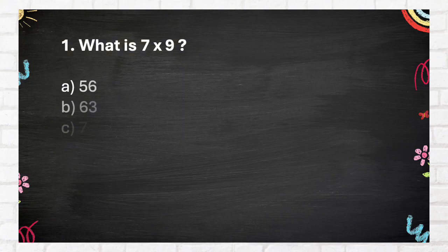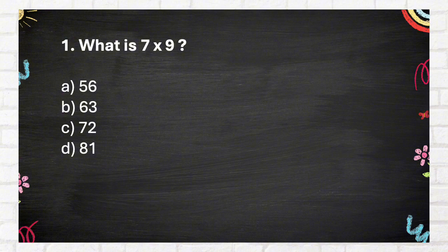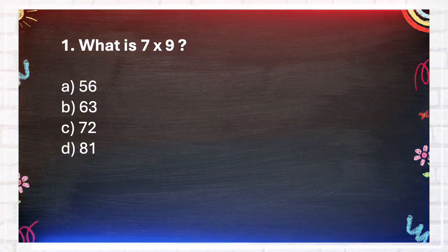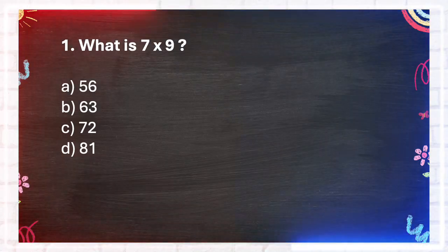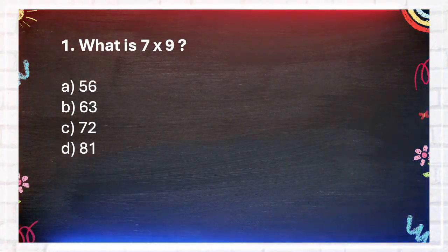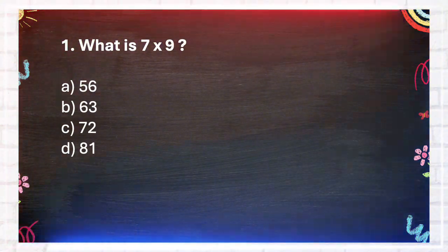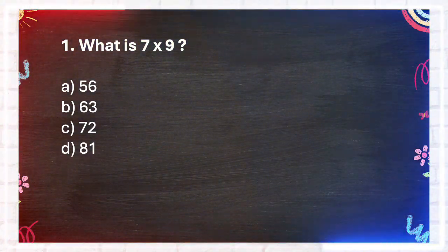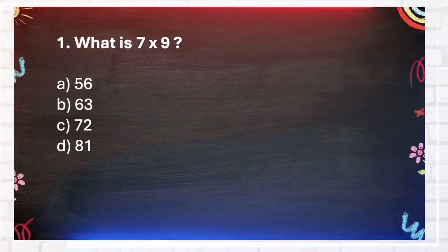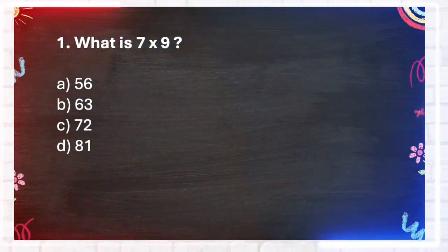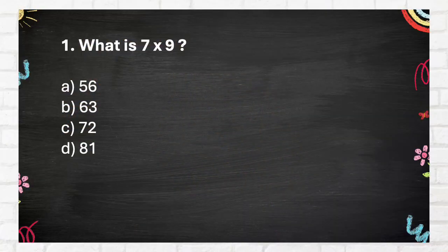Question number 1. What is 7 times 9? Again, what is 7 times 9? A. 56. B. 63. C. 72. D. 81. The answer is B. 63.